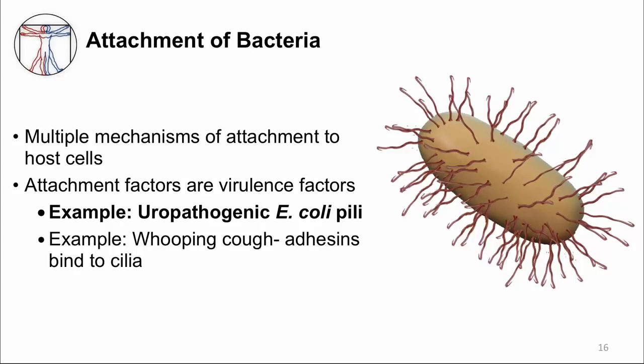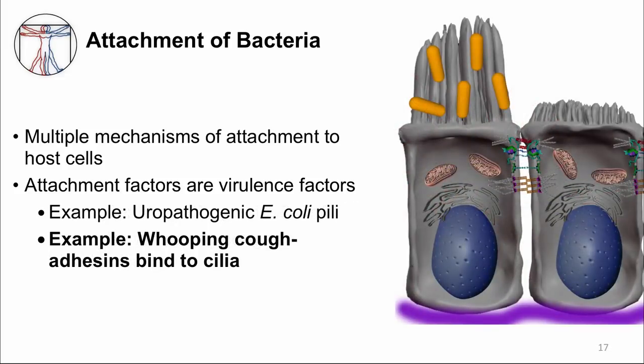Other bacteria use surface molecules as adhesins rather than pili. For example, the bacteria Bordetella pertussis that causes whooping cough can directly attach to cilia in our airways, as you can see in this drawing. Amazingly, these cilia are the same structures that would clear most other microbes.